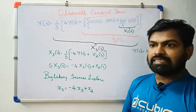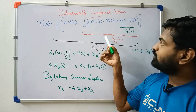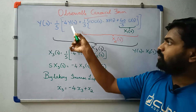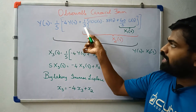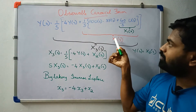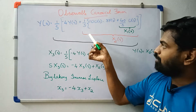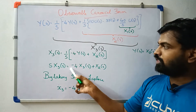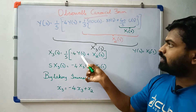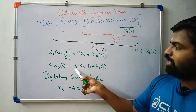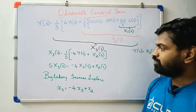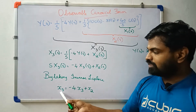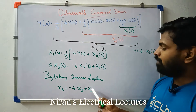Since x3(s) equals x2(s) over s, we substitute and cross-multiply: s times x3(s) equals minus 4 Y(s) plus x2(s). This is the derivative, so x3 dot equals minus 4x3 plus x2.